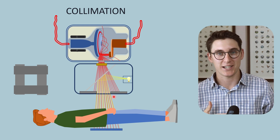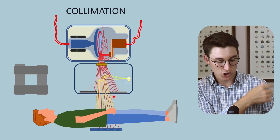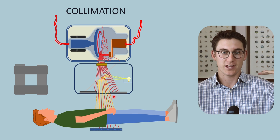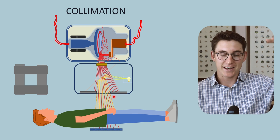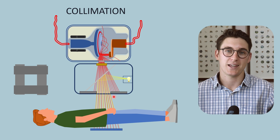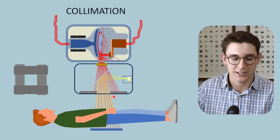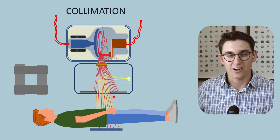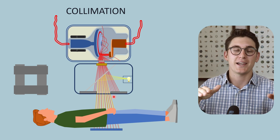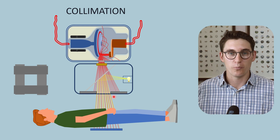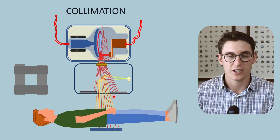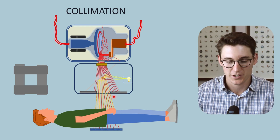If you've ever seen someone getting an x-ray, you'll notice that square of light on their body — that is the collimator showing exactly where the x-ray field is. The more we collimate an image, the more we reduce the x-ray exposure to the patient.